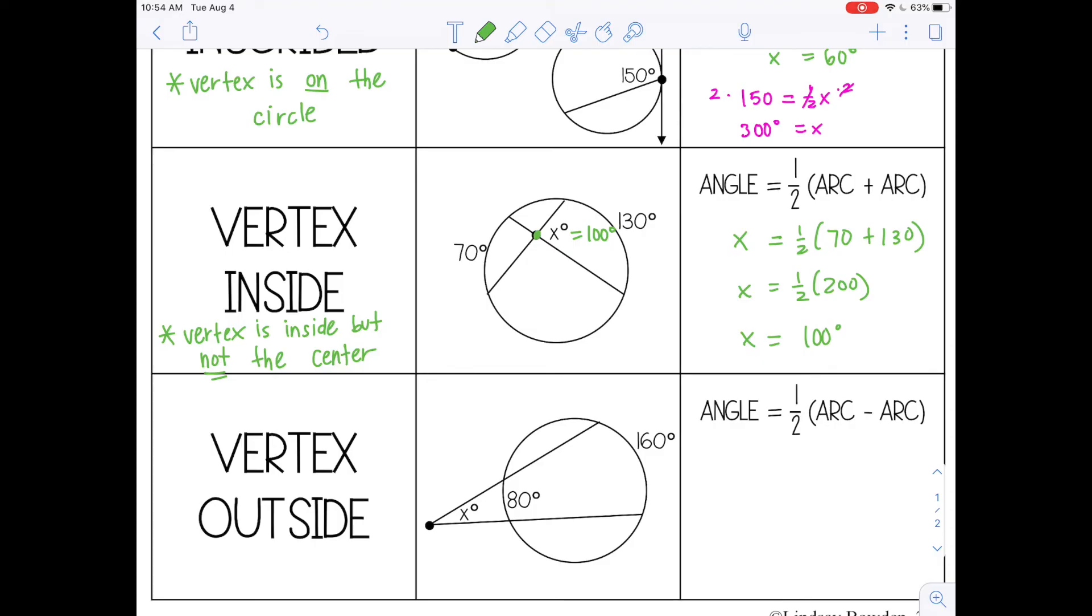And then the last one is vertex outside. And as the name suggests, the vertex is outside the circle.